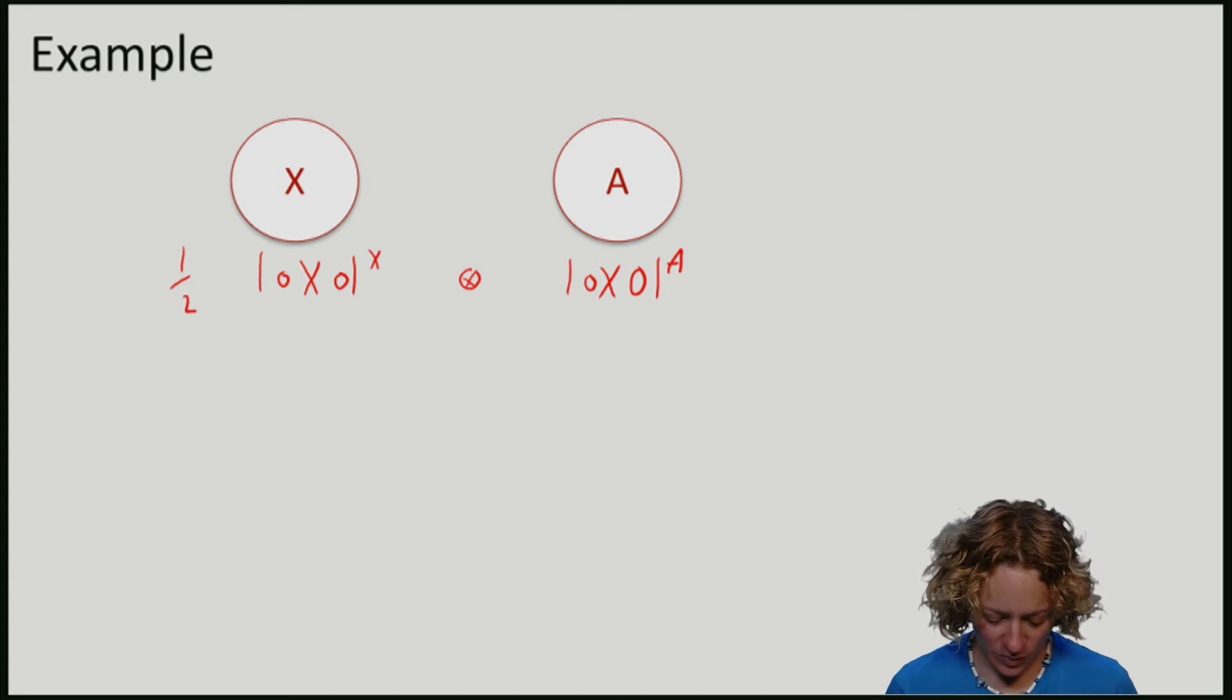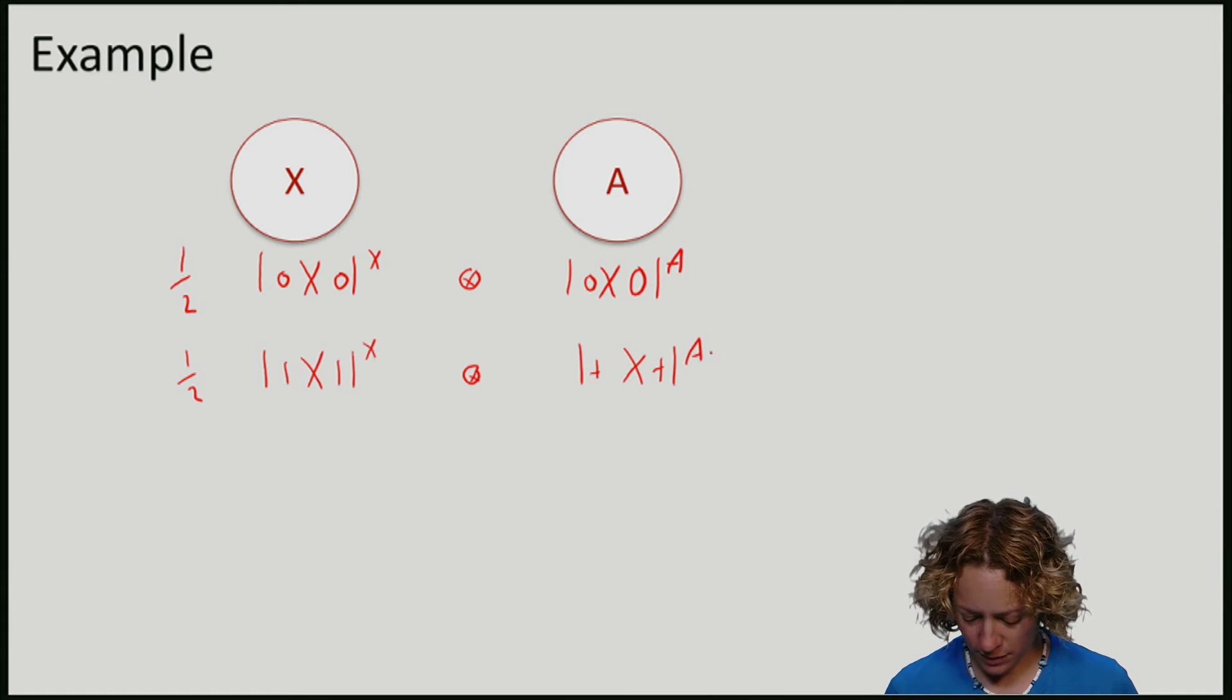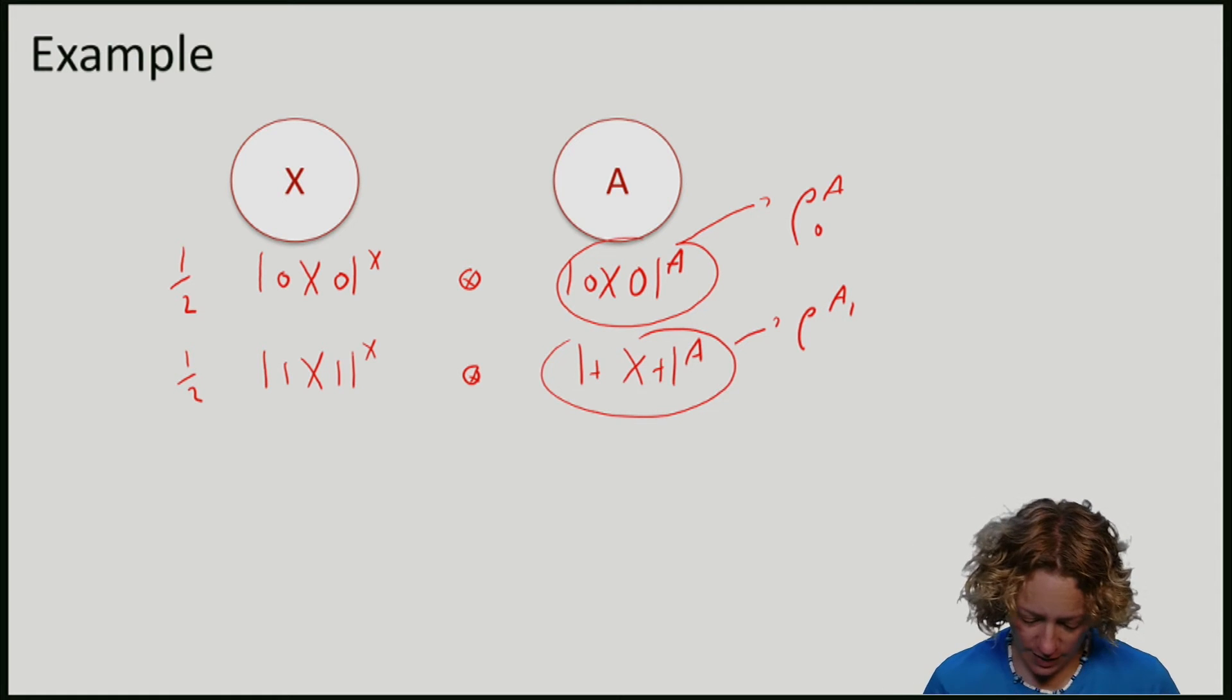Let's say that with probability half I prepare X in the one state and A in the plus state.